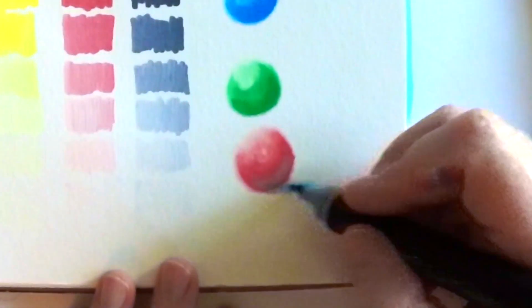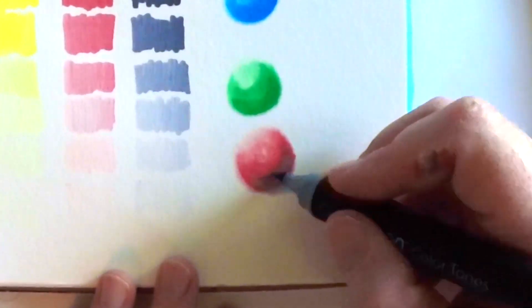Say for instance you have a tone and you went a little too dark, you could connect it to the mixing chamber again, pull it out, and then go across the darker color and it would actually lighten it. So that's another cool thing about these.